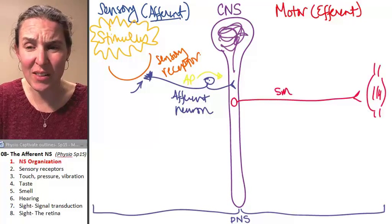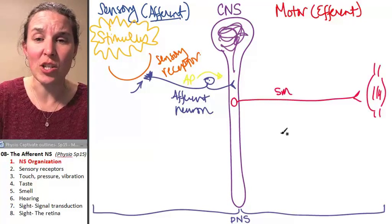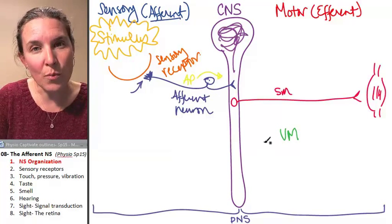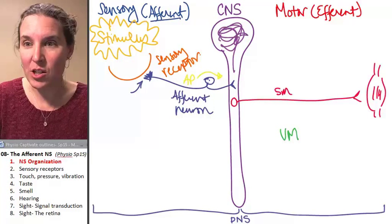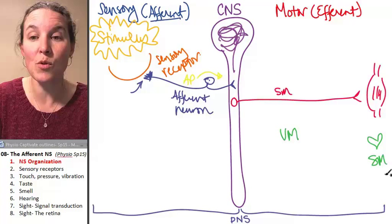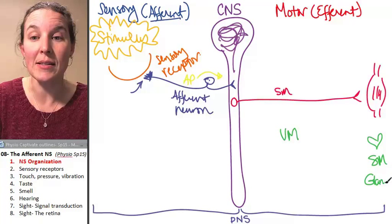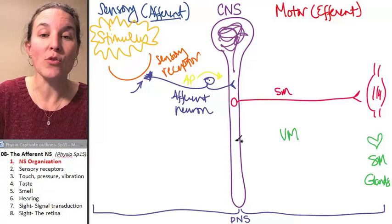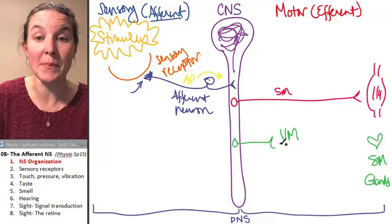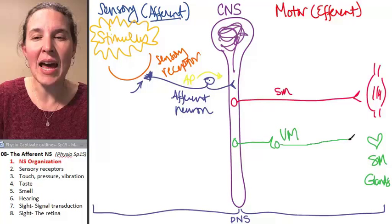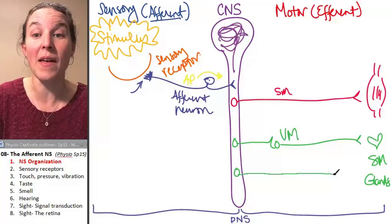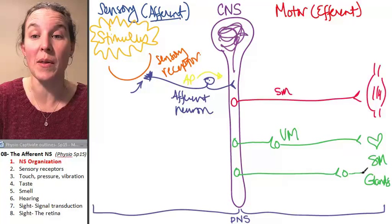But not everything is somatic motor. You can actually have visceral motor responses, and a visceral motor response is the effector in this case is going to be cardiac muscle, smooth muscle, or glands. Visceral motor, again, we have a cell body in the central nervous system, and the anatomy in a visceral motor pathway is a little bit different, and we'll talk about that in the next lecture.